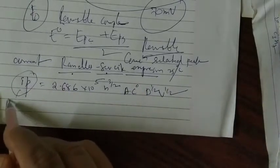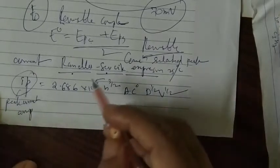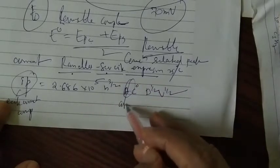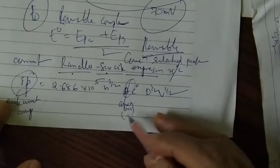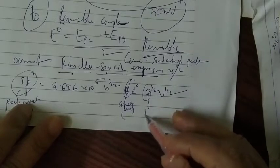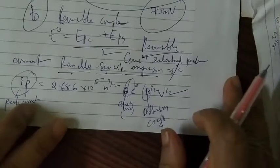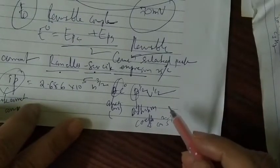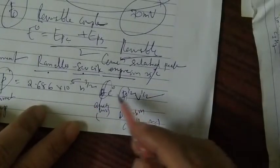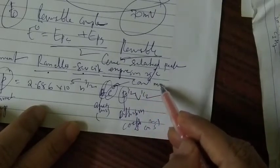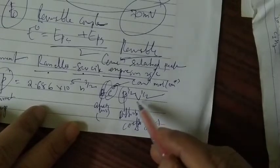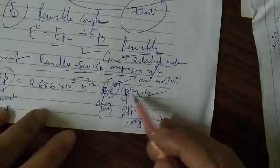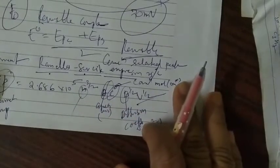In this expression, Ip is the peak current in amperes; A is the electrode area in cm²; D is the diffusion coefficient in cm²/s; C⁰ is the concentration in moles per cm³; and V (or N) is the scan rate in volts per second.